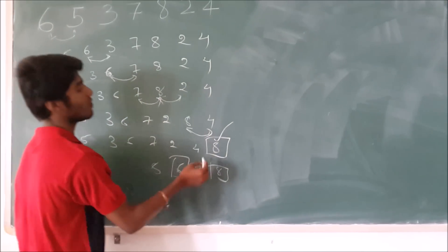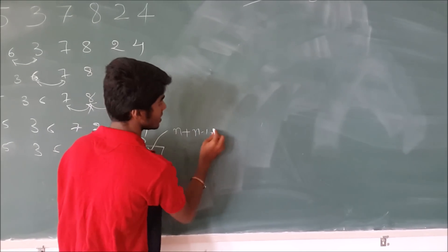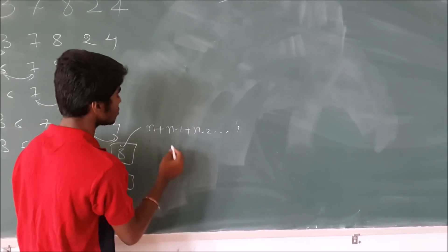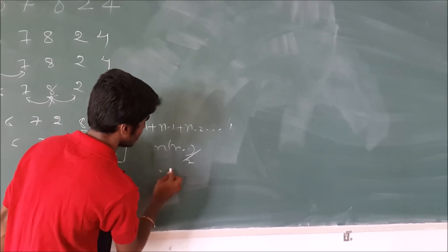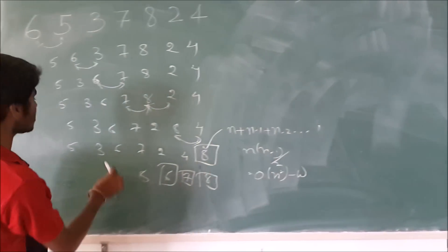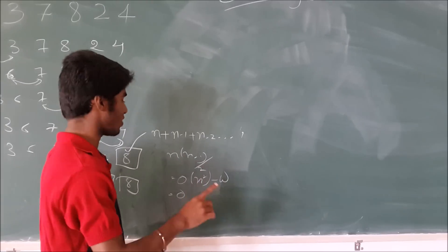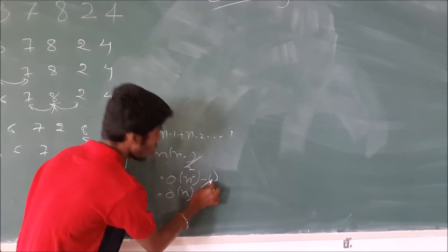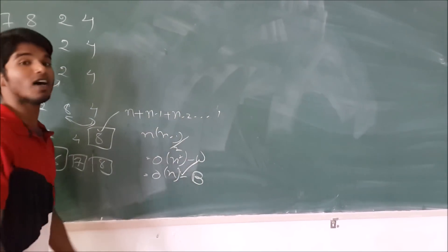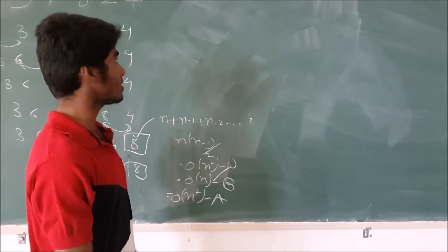If we come to the time complexity of bubble sort: in the first iteration we'll have to make n comparisons, in the next iteration n-1 comparisons, and in the next n-2 comparisons, till we reach 1. Thus in the worst case, the time complexity of bubble sort is n*(n-1)/2, which is O(n²). The best case of bubble sort is O(n) — if the elements are already sorted, we just loop through the array. The average case also turns out to be O(n²).